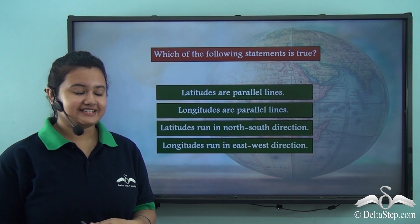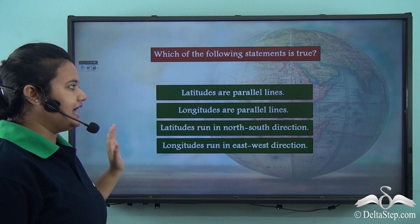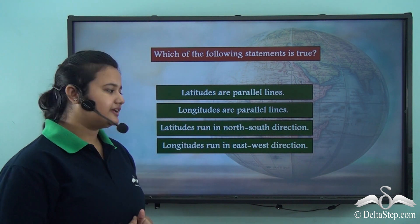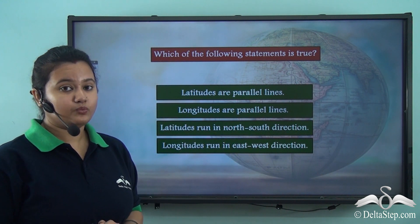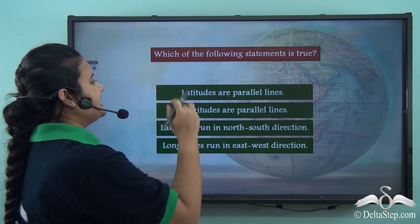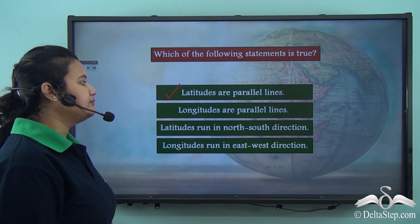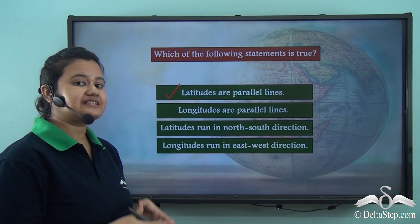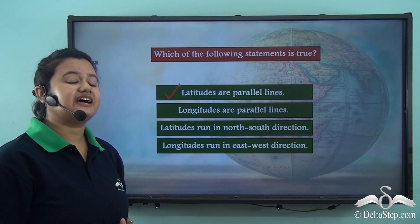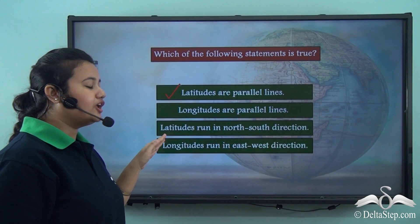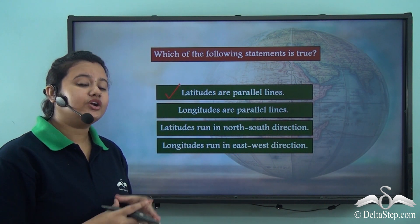Before we proceed, let us answer this question: which of the following statements is true? Latitudes are parallel lines. Longitudes are parallel lines. Latitudes run in north-south direction. Longitudes run in east-west direction. The correct answer is: latitudes are parallel lines. The other statements are incorrect because longitudes are non-parallel lines and they intersect. Latitudes do not run in north-south direction — they are horizontal lines running in an east-west direction. And longitudes are vertical lines that run in a north-south direction, not east-west.